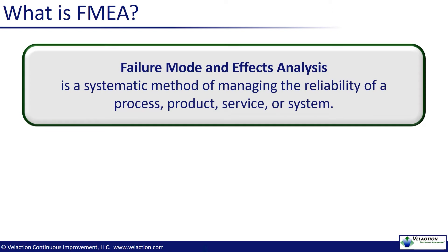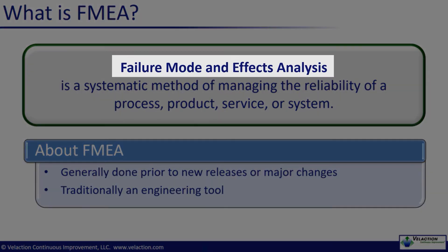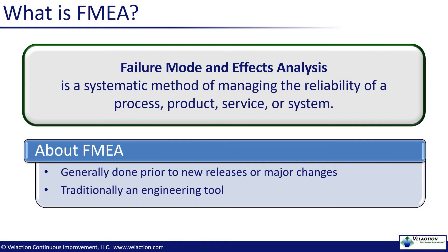FMEA is the process of taking a systematic look at how something might fail. It is normally, but not exclusively, done before product launches or major updates. It is traditionally an engineering function, but we see a lot of value in using this methodology to take a look at new processes that you set up during your continuous improvement efforts. Most people are not going to use the full name, Failure Mode and Effects Analysis. You may hear people try to pronounce some version of the abbreviation as if it is a word. I tend to just prefer saying all the letters as FMEA — it tends to prevent confusion.